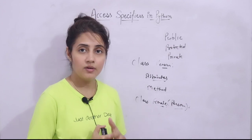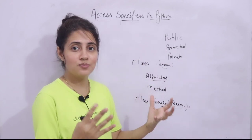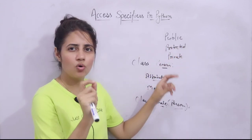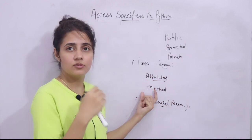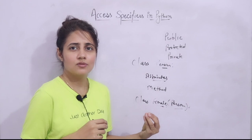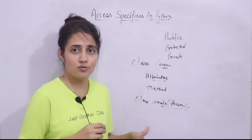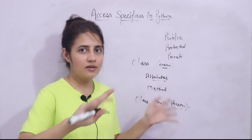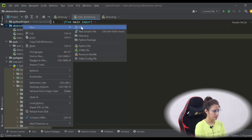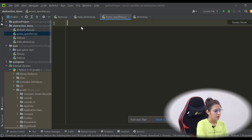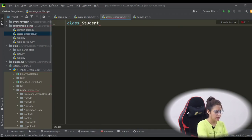Now, one thing to clarify: in Python, we don't have a strong concept of public, protected, and private specifiers like in Java or C++. In Python, there is no strict keyword for these. We just use single underscore and double underscore conventions. You can make a variable private, but there are some methods using which we can even access private methods and attributes outside of the class.